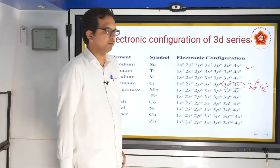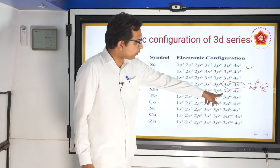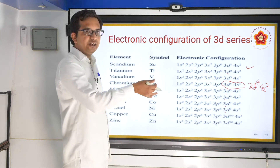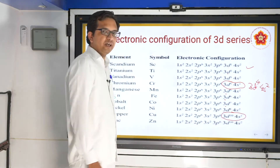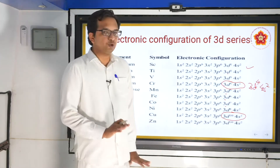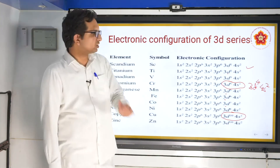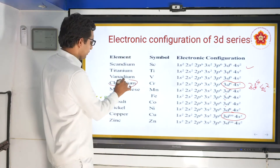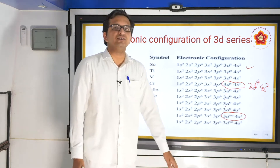Continuing — after 3d⁵ it comes back to 4s², giving 3d⁵, 3d⁶, 3d⁷, 3d⁸. After 3d⁸, you should have had 3d⁹, but suddenly it shows 3d¹⁰ with also a decrease of one electron in 4s. These two cases — chromium and copper — are exceptions to the general rule that one electron is added to every d orbital continuously.